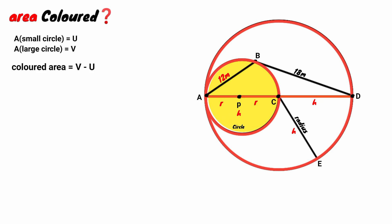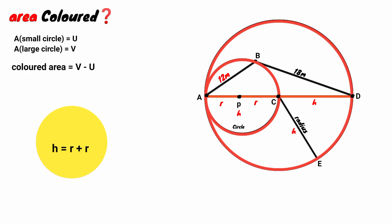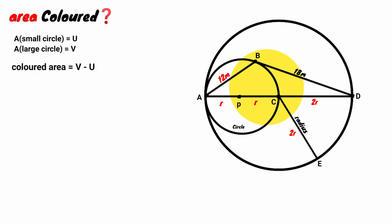The length of line AC is h, but it is divided into r and r, so h equals r plus r, which is 2r. We replace h with 2r. Now draw a chord connecting point P and point C.